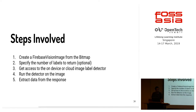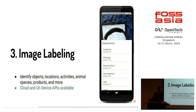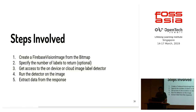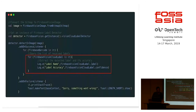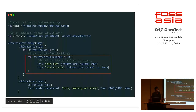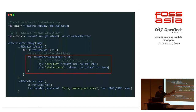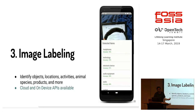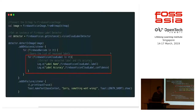The steps involved are the same. Create a Firebase Vision image; you can optionally specify how many labels you want to return — let's say I only want 20 items, so it will give me the top 20. Then get access to the on-device or cloud image detector, run the detector on the image, and extract the results. It's exactly the same as the other APIs we saw. The crucial part: you get the name of the label and the accuracy or confidence of that label. The confidence is listed as well — accuracy is probably 96%, so it gives you both accuracy and the label name.